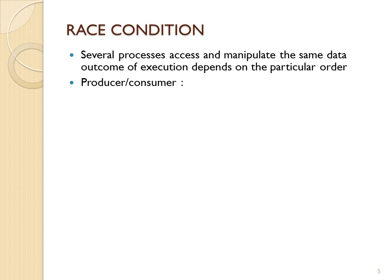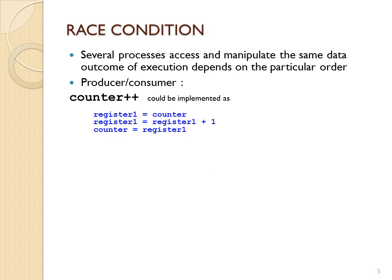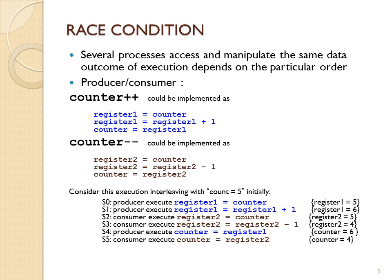What happens is as the producer produces and makes a copy of the counter, the consumer consumes and makes a copy of the counter, and you can have inconsistencies. This leads to a problem because you'll be trying to consume the wrong location, or you might think it's full or empty because of the inconsistent value that the counter holds. That's a race condition.